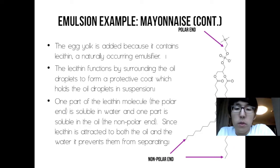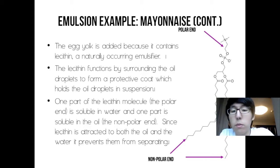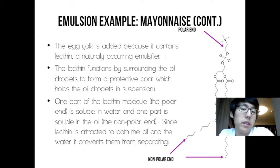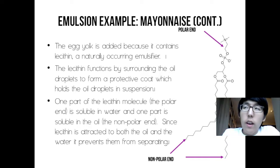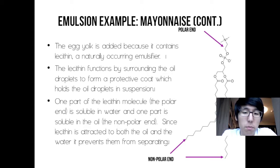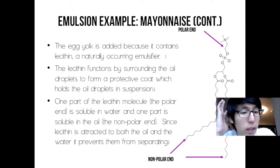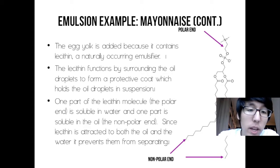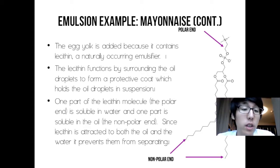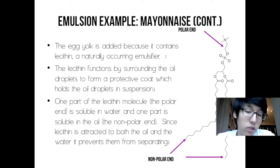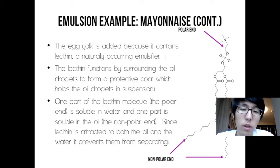One part of the lecithin molecule, the polar end, is soluble in water, and one part is soluble in the oil, the nonpolar end. Since lecithin is attracted to both the oil and the water, it prevents them from separating. If you look at the picture on the right, the polar end is near the top where nitrogen and oxygen connect, and the nonpolar end is at the bottom where there are two other lines.